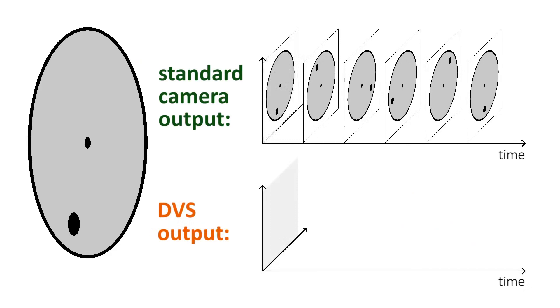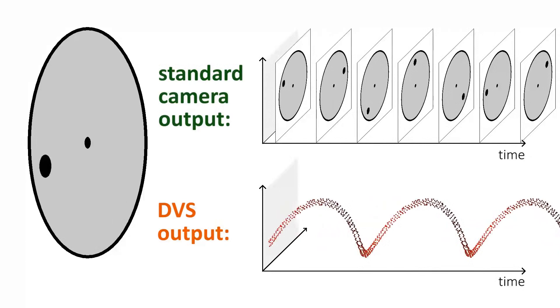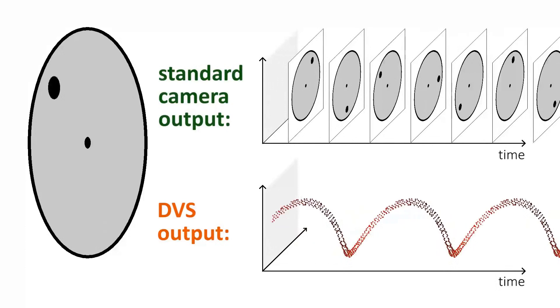This visualization shows the output of a standard camera and that of an event camera, called DVS, when they both look at the black dot on a rotating disk. As we can observe, for the event camera, the events form a spiral in space and time.